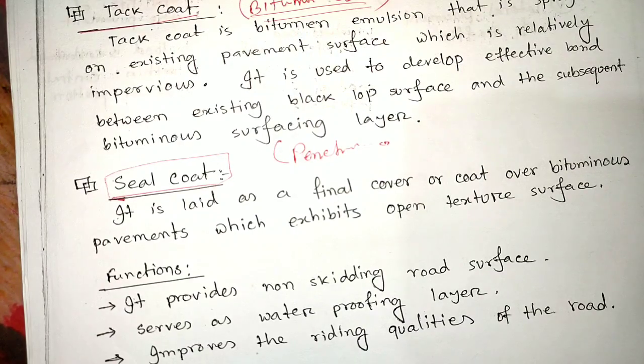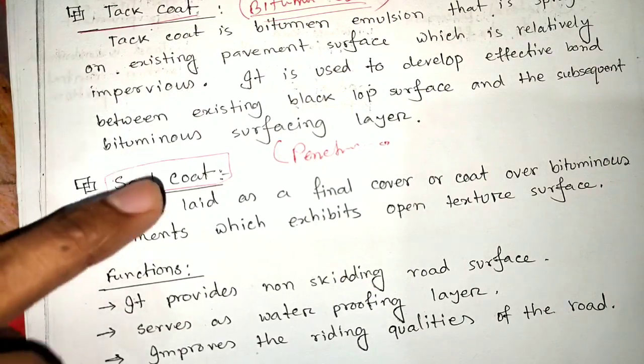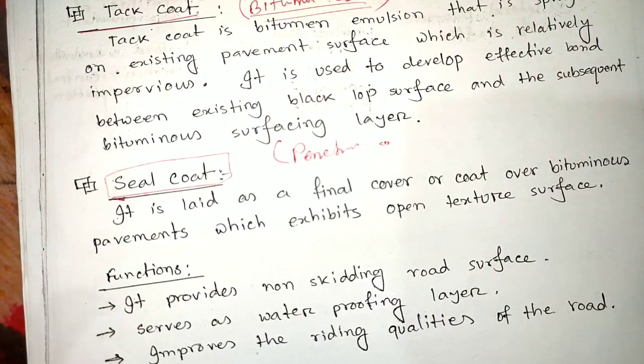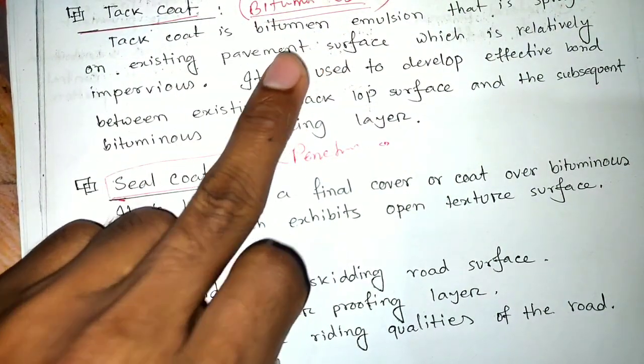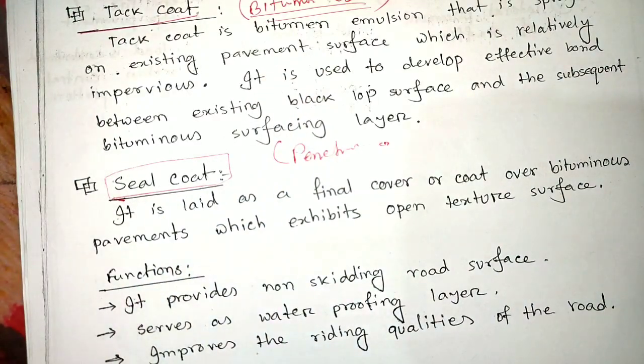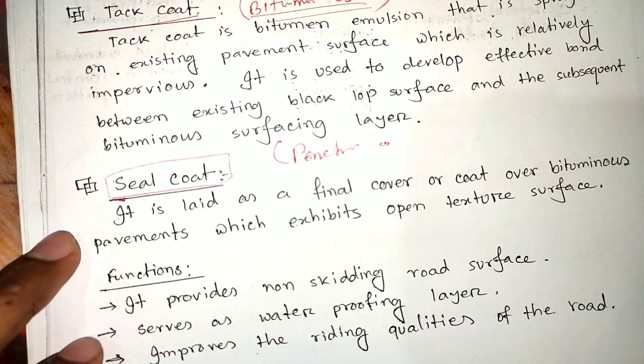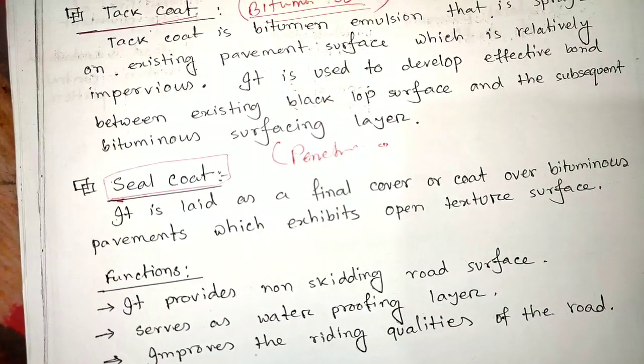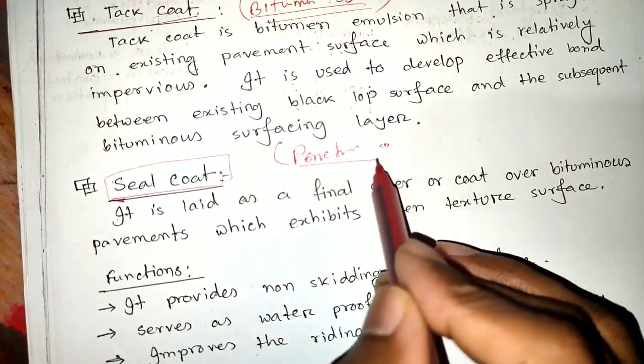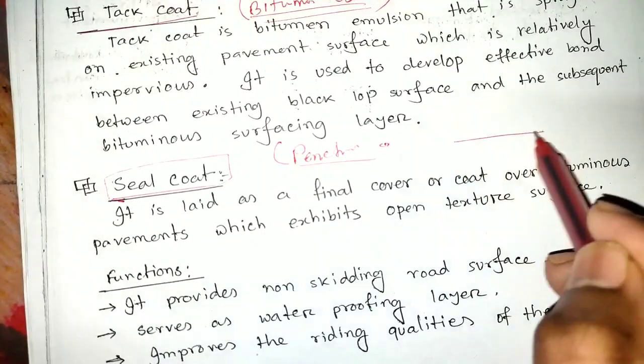There's a difference between premix bound and penetration bound. Premix bound means aggregate is mixed with bitumen - they are mixed together. Penetration bound means the surface will be painted with bitumen.